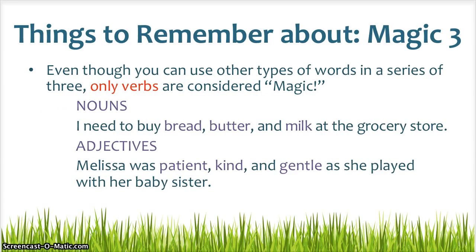One last thing to remember about magic three sentences: even though you can use other types of words in a series of three, only verbs are considered to be magic. You can write a sentence like "I need to buy bread, butter, and milk at the grocery store," but bread, butter, and milk are all nouns — they're objects, not verbs — so that sentence would not be a magic three sentence. You can also write "Melissa was patient, kind, and gentle as she played with her baby sister." However, patient, kind, and gentle are adjectives, not verbs, and therefore that's not an example of a magic three sentence either.